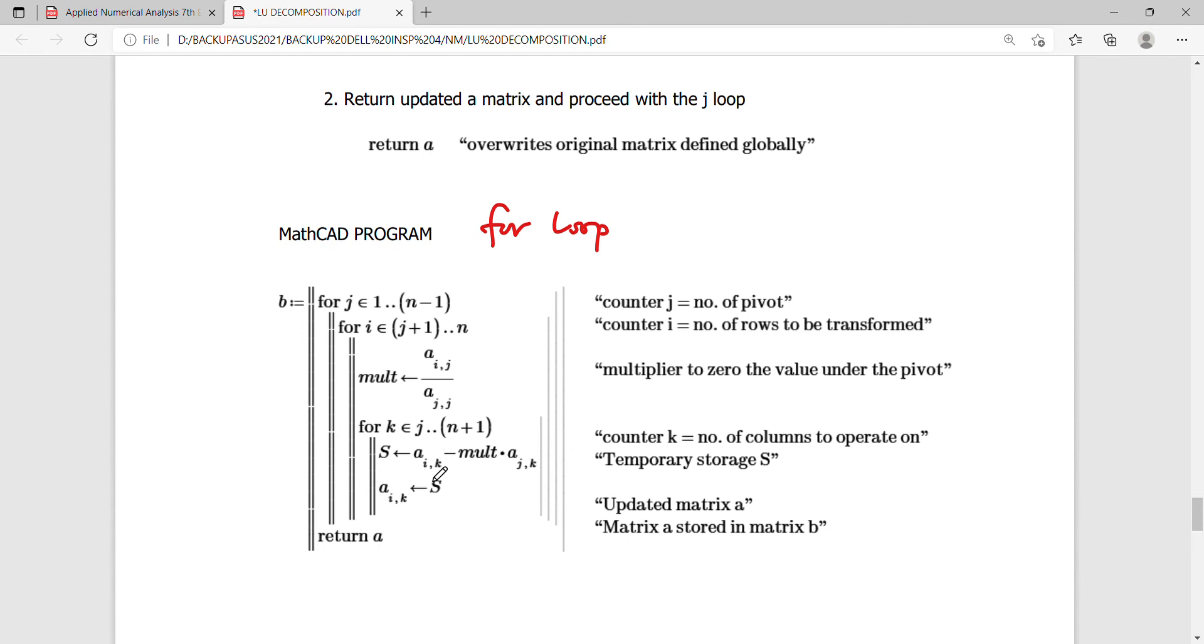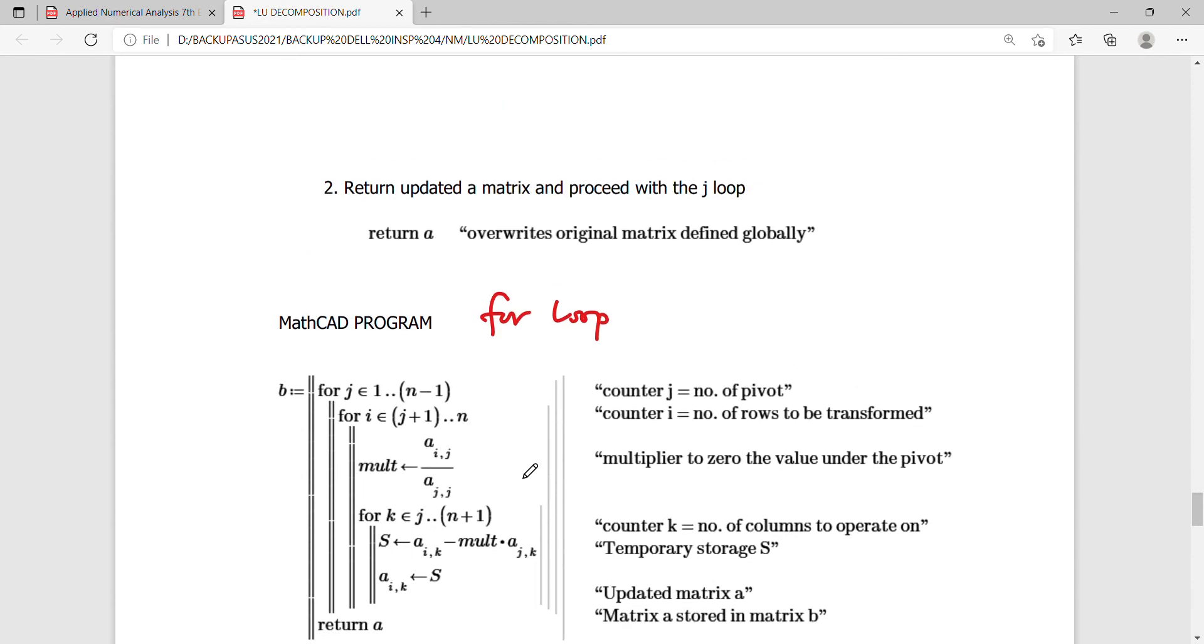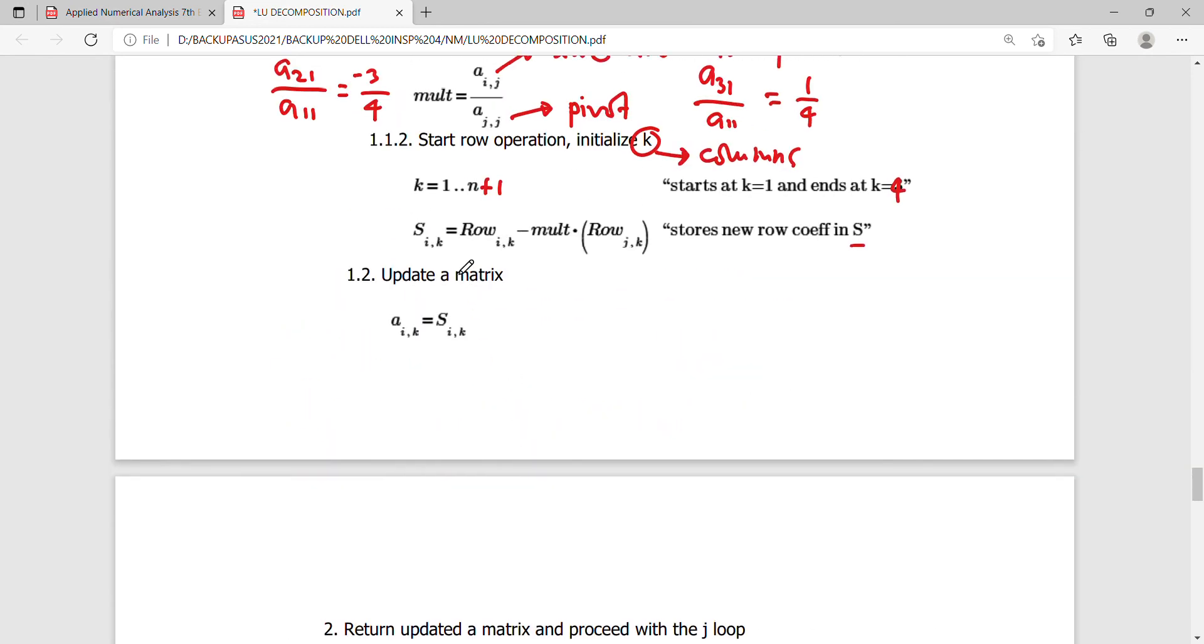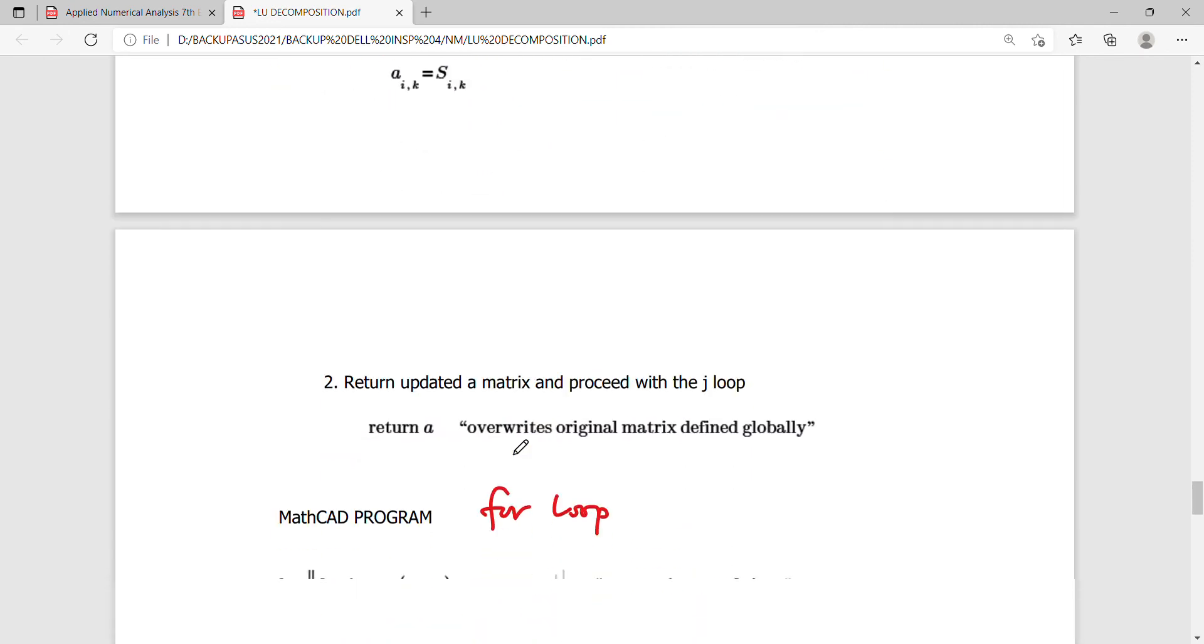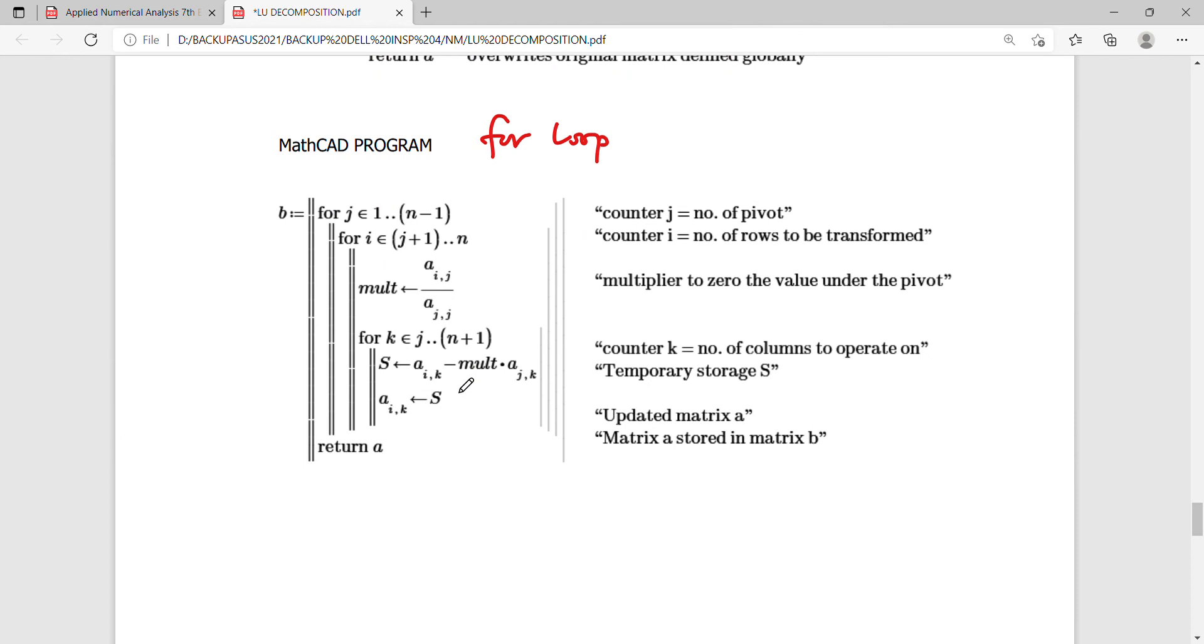I start solving the multiplier. And I initialize again another counter to capture the number of columns to operate on. So S is A_ik minus multiplier times A_jk is actually step 1.1.2 here, which actually stores your operation, the result of the operation, into a temporary storage S, and then update it on the matrix A_ik and return it to a matrix B so that it will not be lost, because it will be overwritten on the succeeding loop.